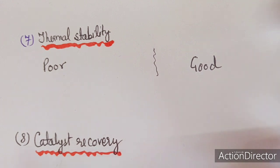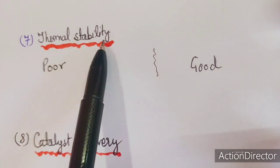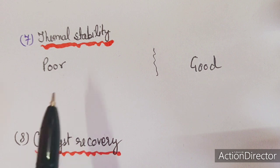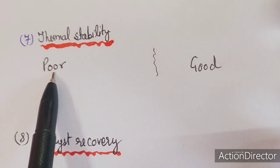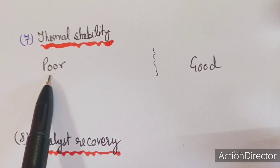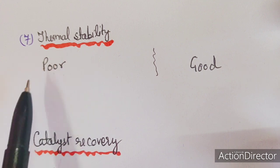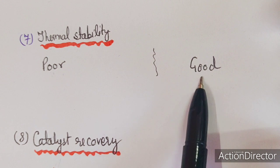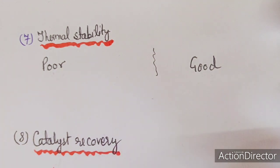Comparing thermal stability: we use homogeneous catalysts at low temperatures because their thermal stability is very poor. They are temperature sensitive and become unstable at high temperatures. Heterogeneous catalysts have better thermal stability.